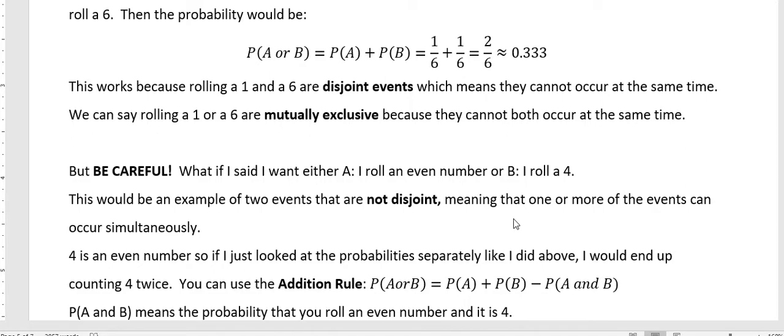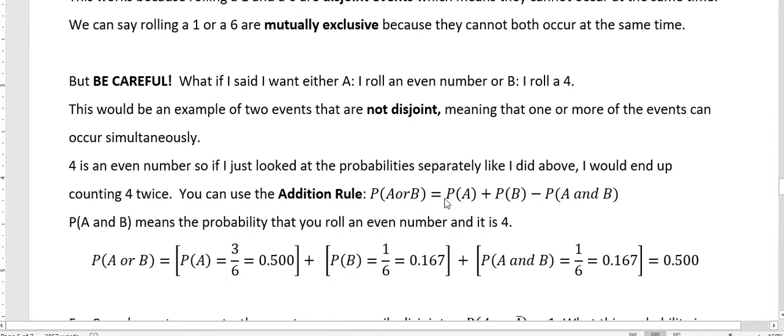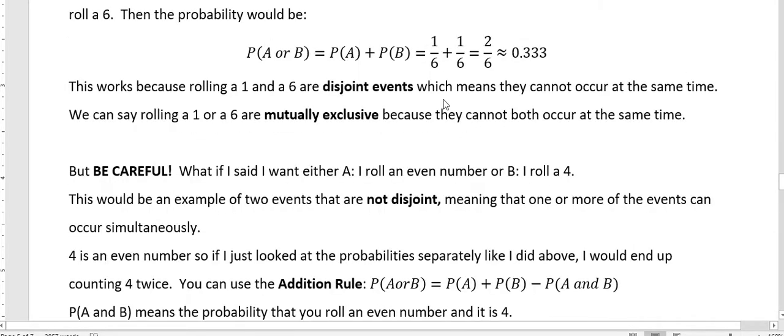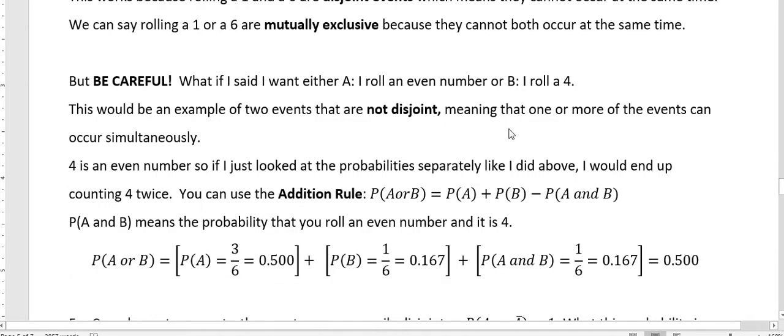And the addition rule says to find the probability of A or B, then you take the probability of A plus the probability of B, and then you subtract the probability of that overlap, which we didn't do before because there is no overlap between rolling a one and a six. But if you don't have disjoint events, then you have to figure in that overlap.